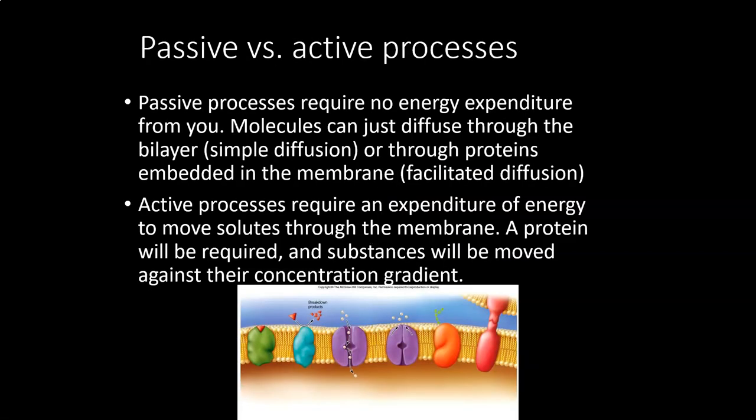Passive versus active refers to energy expenditure. If a process is passive, you don't have to spend energy. If it's active, you do. Diffusion and osmosis are both passive processes that allow materials to move in and out of the cell depending on the chemistry of those molecules. Active processes require proteins, and those proteins spend energy — ATP — to move things across.